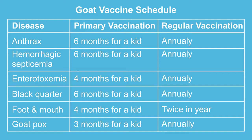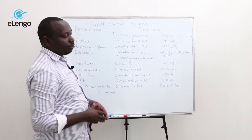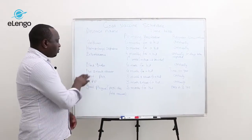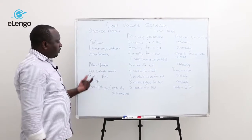The other one is enterotoxemia. The kid is given the vaccine four months after birth, and it is done annually. This vaccine can be boosted 15 days later. If the mother of the kid was not vaccinated, the kid is vaccinated in the first week after birth.